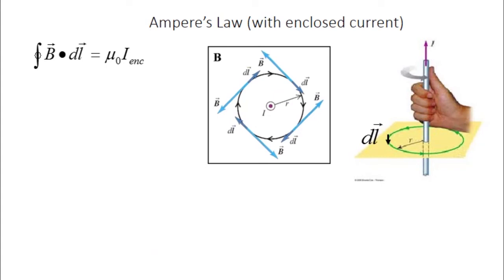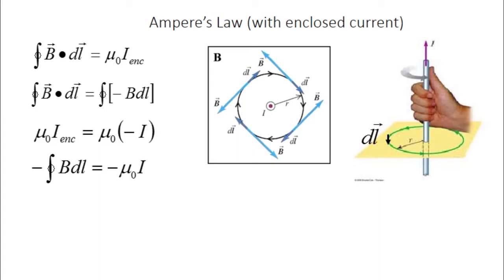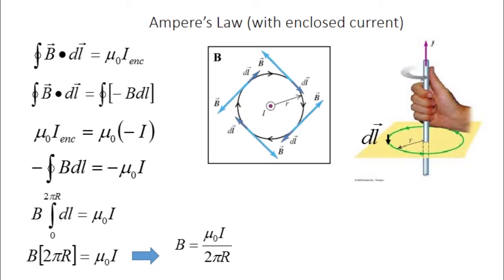Now let's look at the case where we have a negative current. If we put the right-hand fingers in the direction of the integration path — which is clockwise — positive currents would go into the page, but here the current is going out of the page, so it's a negative current. The B vectors go opposite to dL, so B dot dL equals negative B dL, and μ₀ I_enclosed is negative. The two negatives cancel and we're left with the same result. Ampere's Law works with enclosed currents.